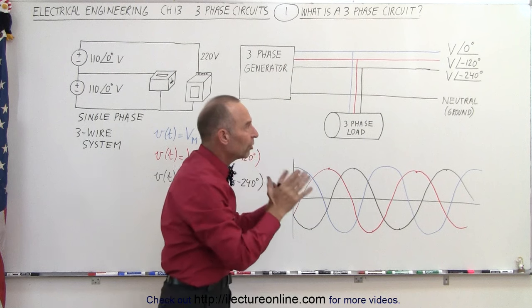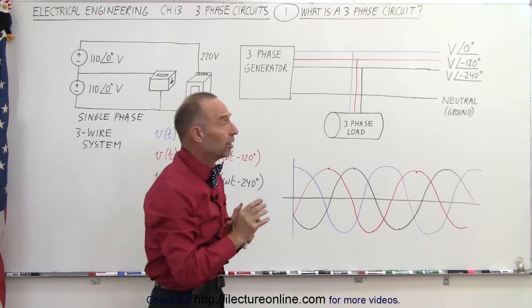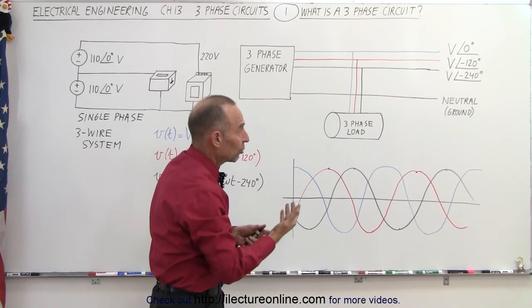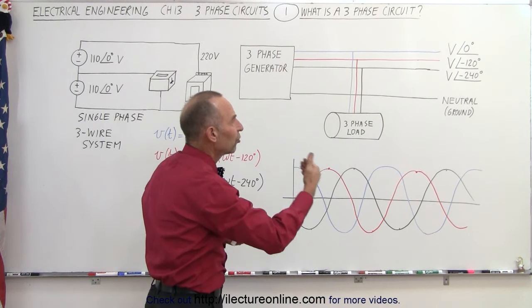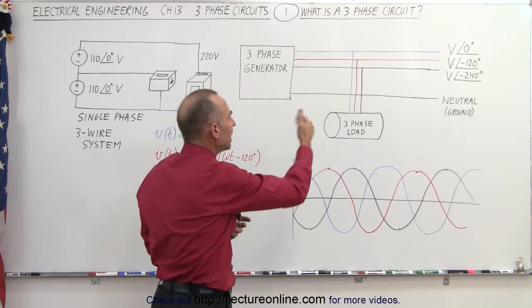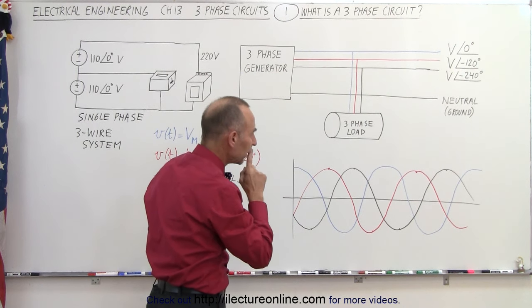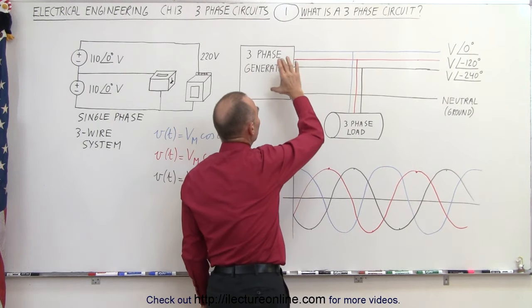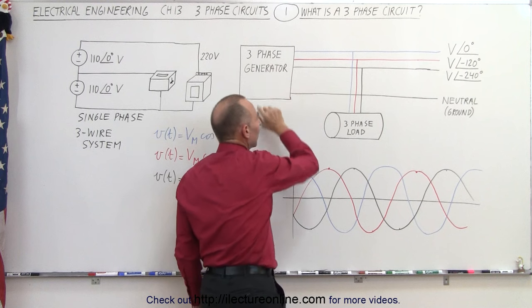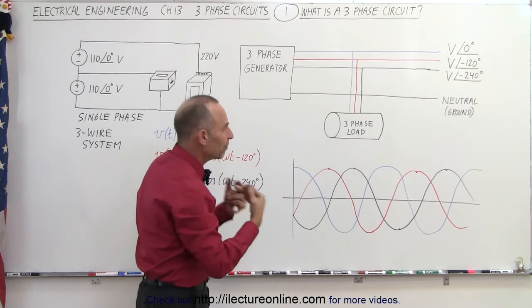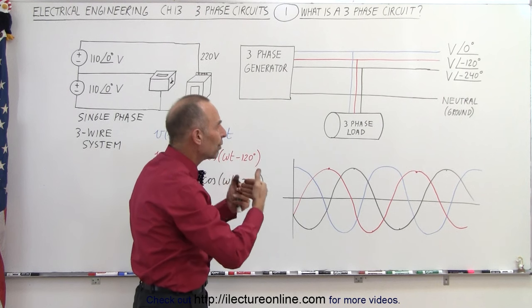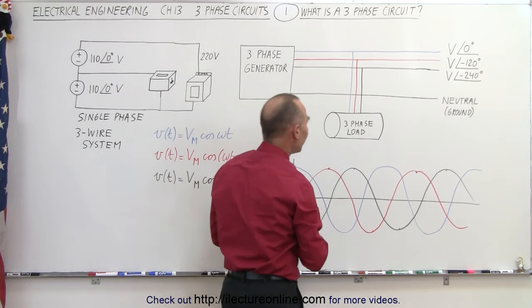You can see that those are all 120 degrees apart from one another, and of course, when you add 120 degrees up three times, you get 360, which is a full cycle of the generator. Now notice, in order to utilize a three-phase generator, we typically require what we call a three-phase load. They're specifically built to require three phases that are 120 degrees apart from one another.